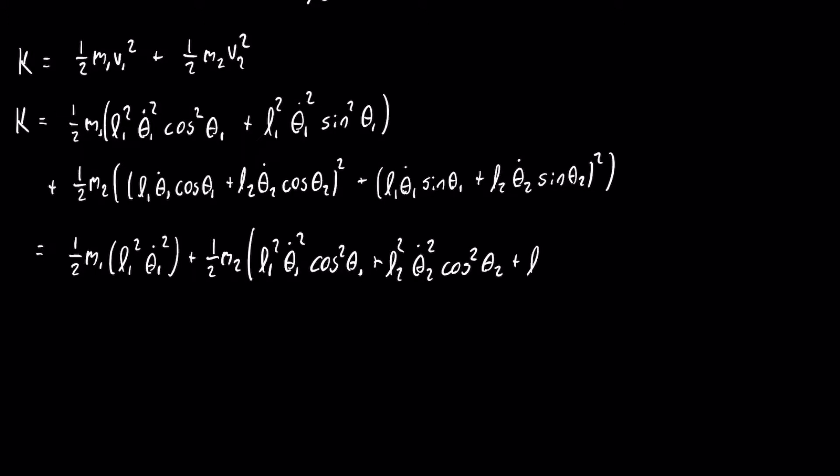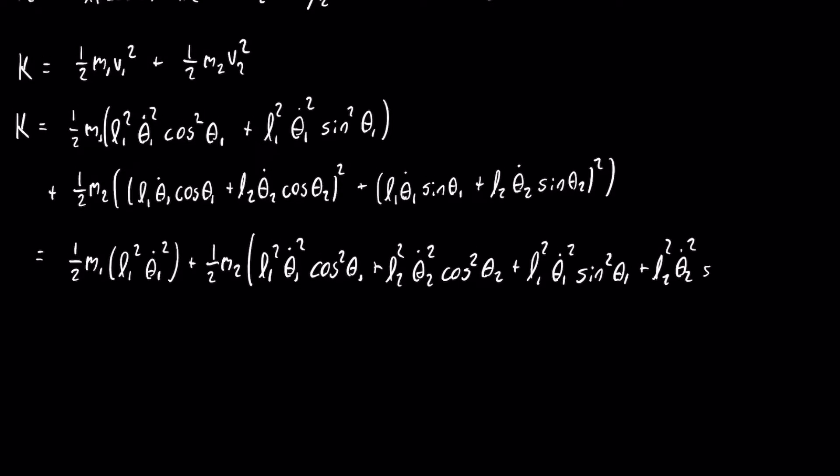For the mixed terms, we will have to use the cosine subtraction formula, and then for the squared terms, we'll be able to factor out certain terms, and then just be left with the cosine squared plus sine squared of theta.